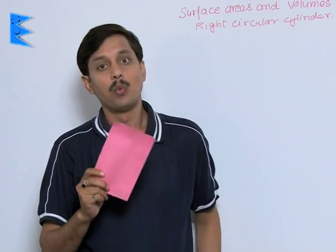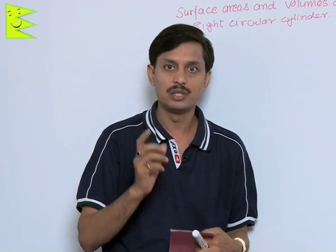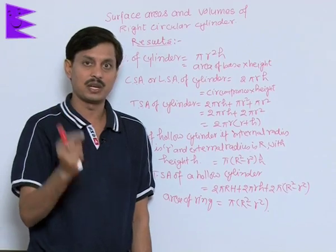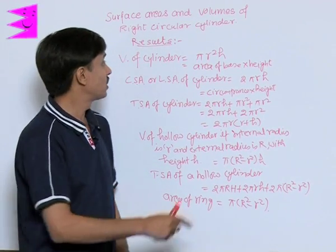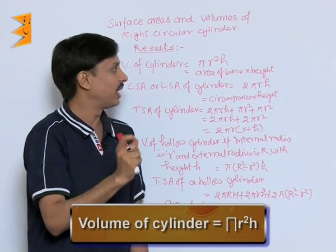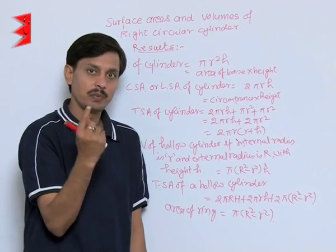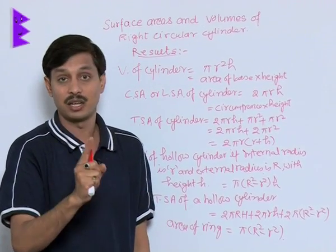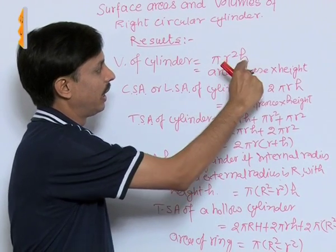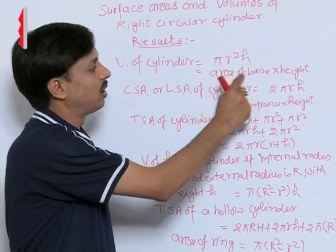Now I want to discuss the results required while solving problems of the right circular cylinder. The first result is: volume of a cylinder is given by πr²h, where r is the radius of the base and h is the height. Since πr² is the area of the base (the base and top of a cylinder are identical circles), the volume can also be written as area of base multiplied by height.